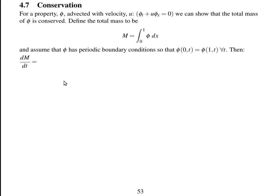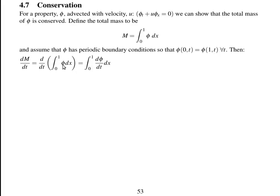To prove conservation, we can calculate the rate of change of mass with time. In order to calculate the rate of change of mass with time, we substitute this equation into here. So we get the rate of change — here's how mass is defined — rate of change of mass with time. And then we move the differential inside the integral. Now we've got d phi by dt here, we can replace it with minus u d phi dx, because we are solving the linear advection equation.